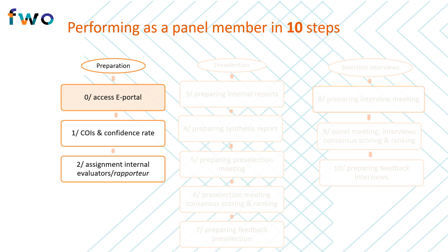The distribution of applications is done by the scientific chair, who is supported by the FWO in this task. For each application, two internal reviewers are appointed at this stage, as well as a rapporteur. You will be informed when this step is completed about which applications you should assess as internal reviewer or as rapporteur. Please be aware that different deadlines apply to the internal review and to the rapporteur reports.